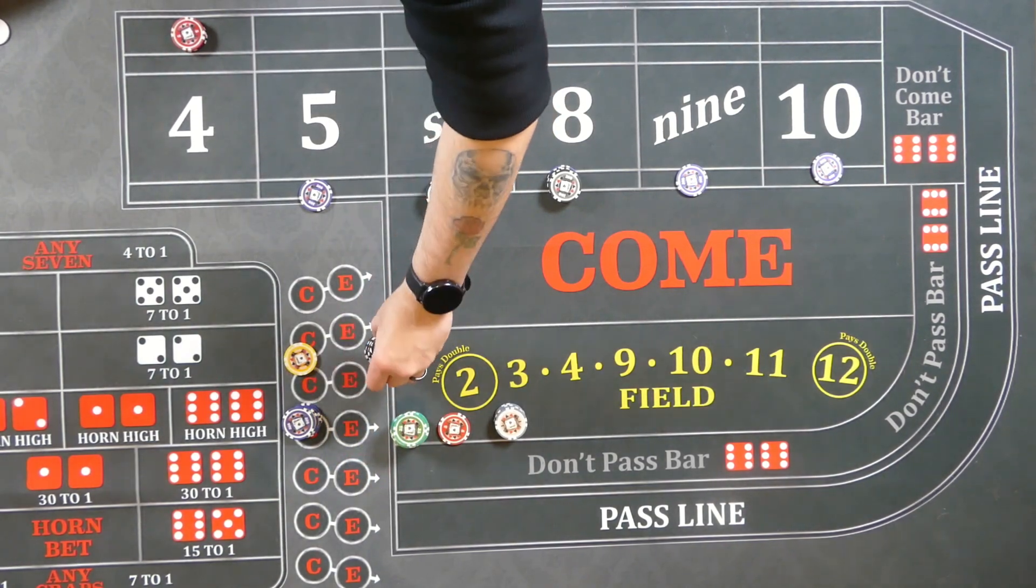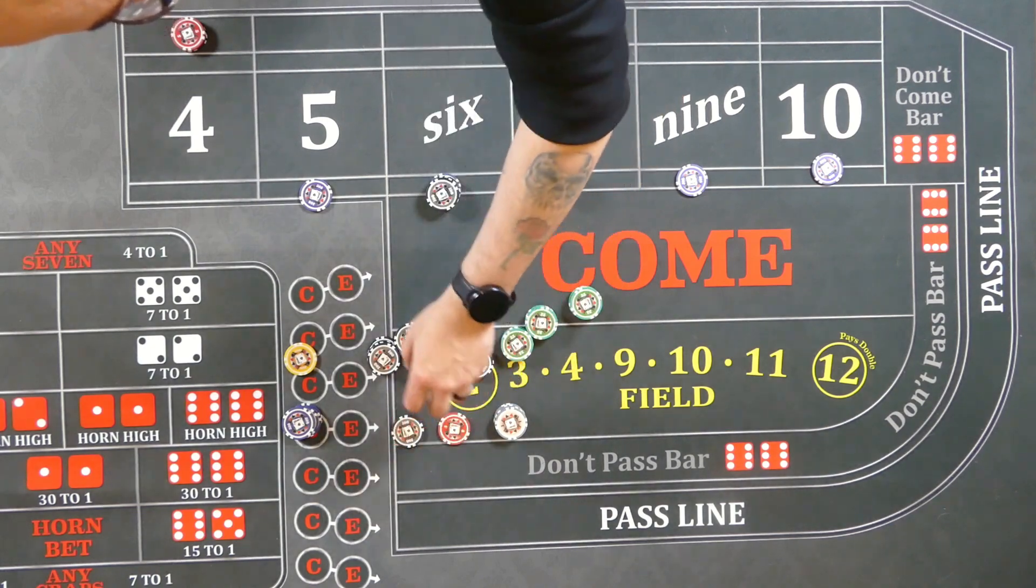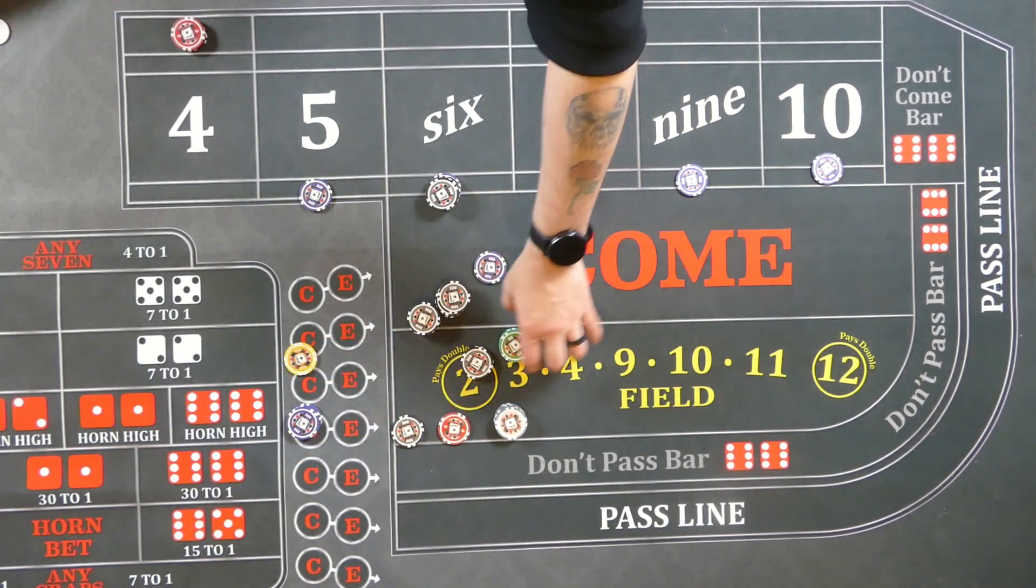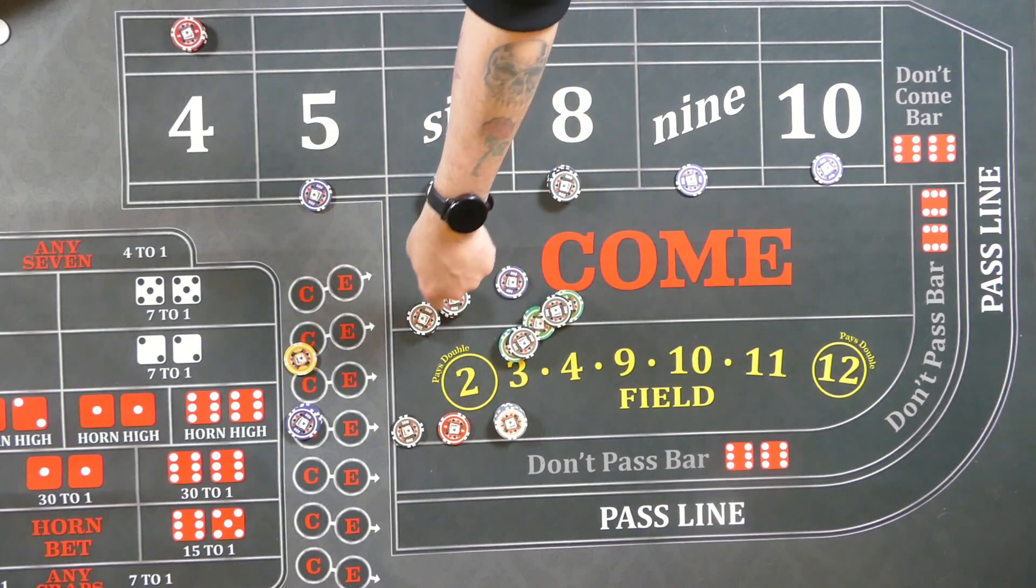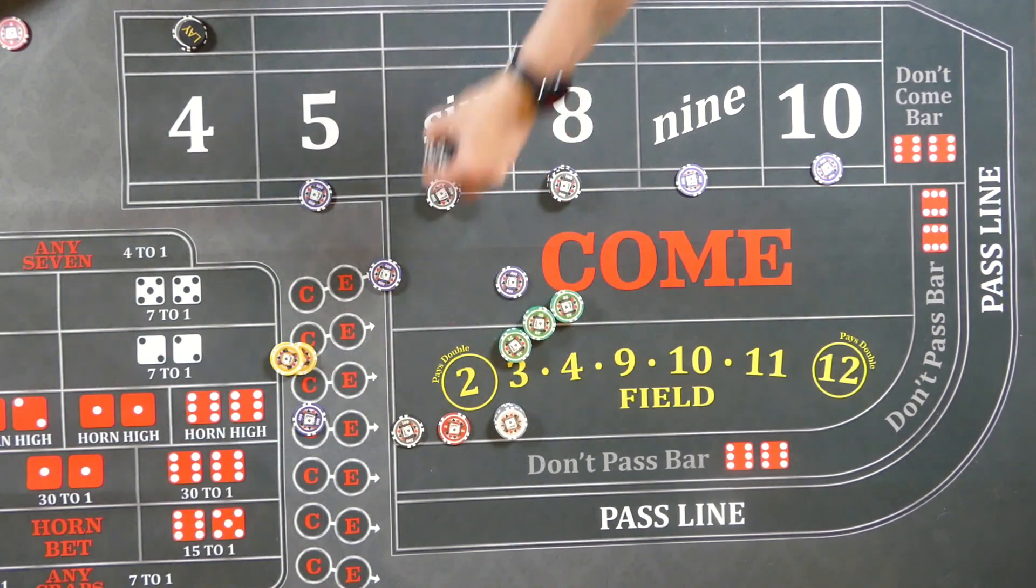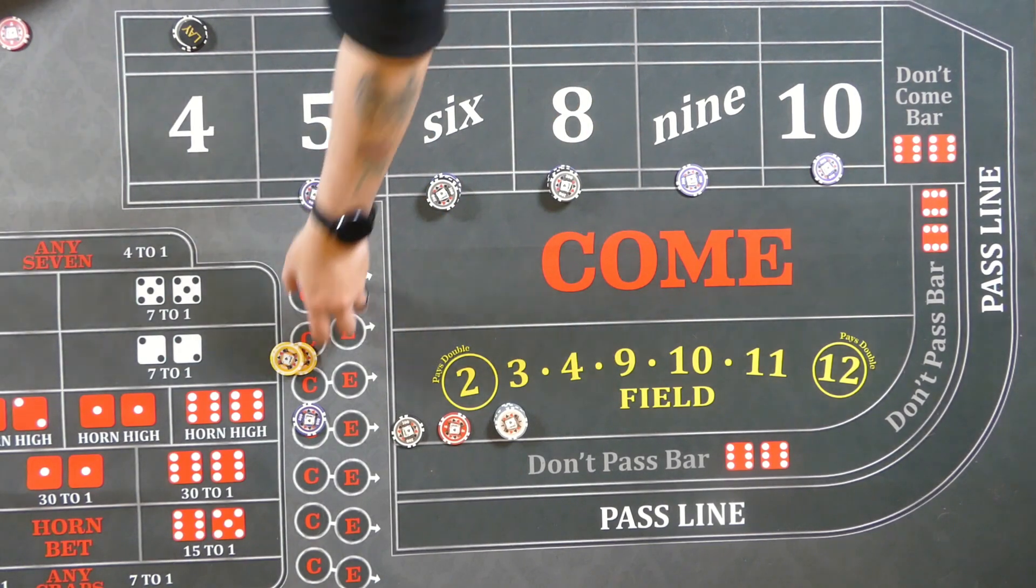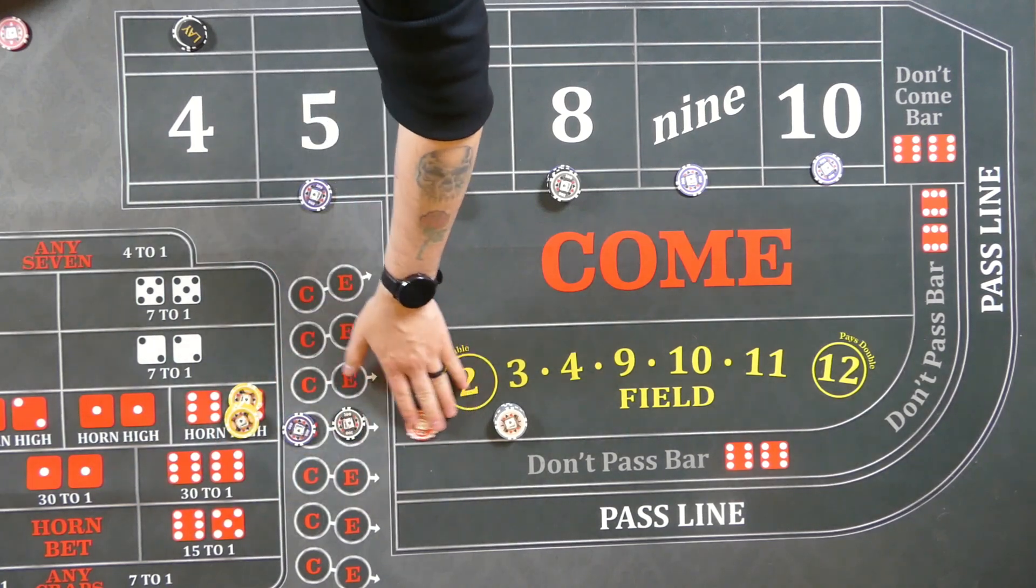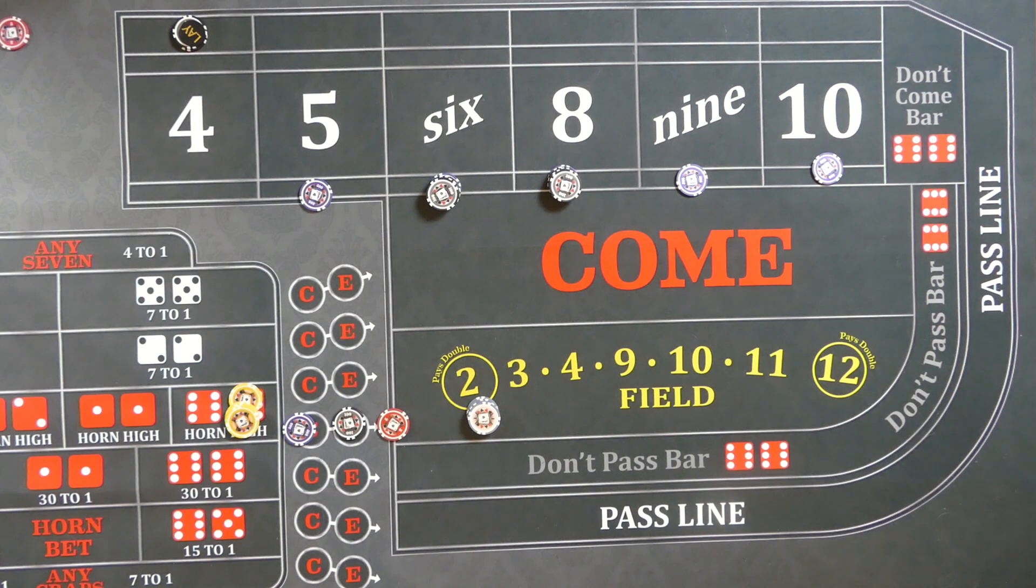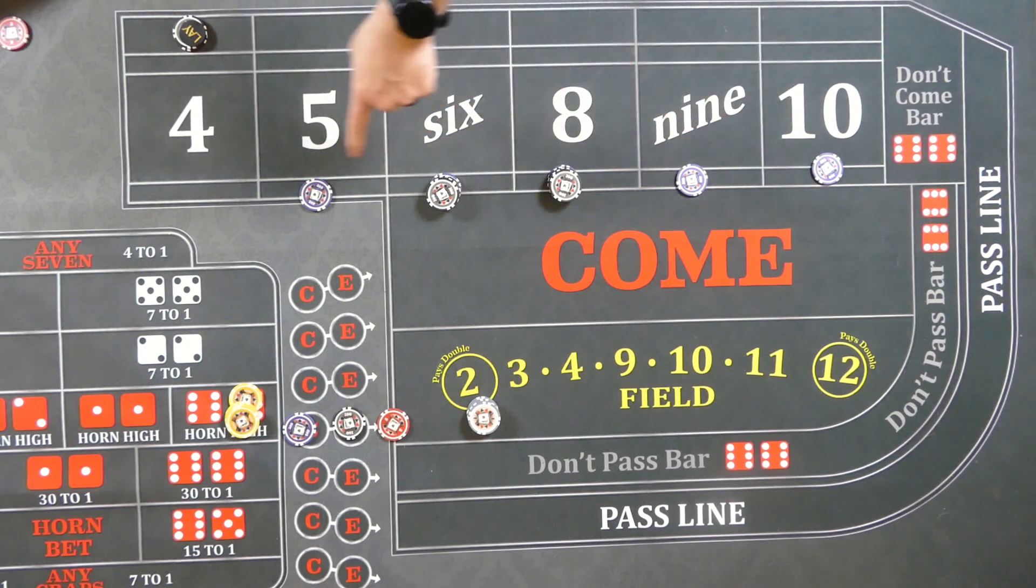So after an absolutely phenomenal roll, this player has in their rail in front of them, $4,609. What do they have on the table? $3,505.